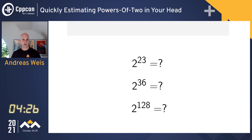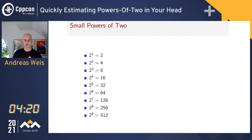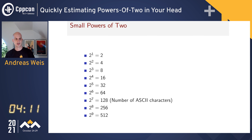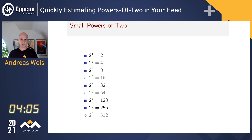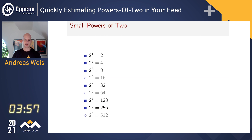Let's start by looking at the small powers of two — and by small I mean less than 10. You probably know some of them by heart already because they keep popping up, like power seven, which is the number of ASCII characters, or power eight, which is the number of states in an eight-bit char. Your list of memorized values may be different from mine, but that doesn't really matter as long as you know how to close the gaps.